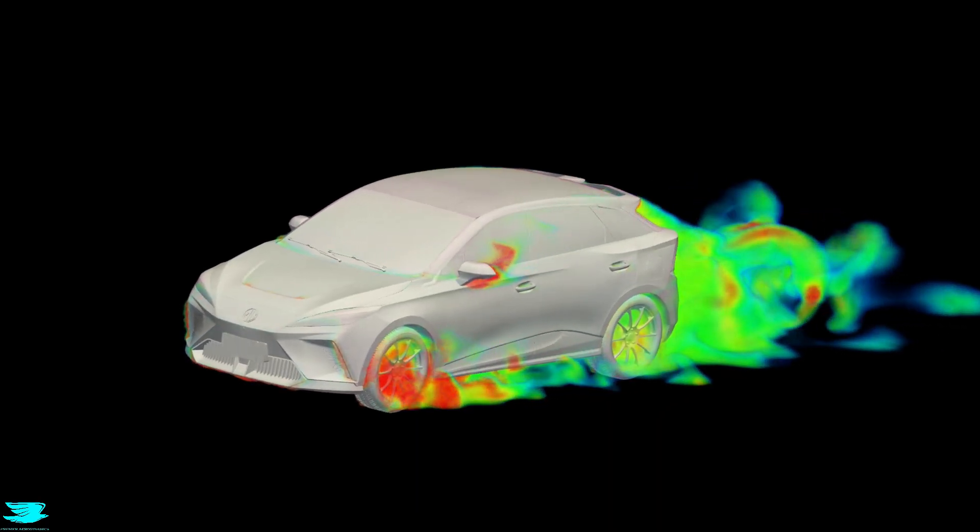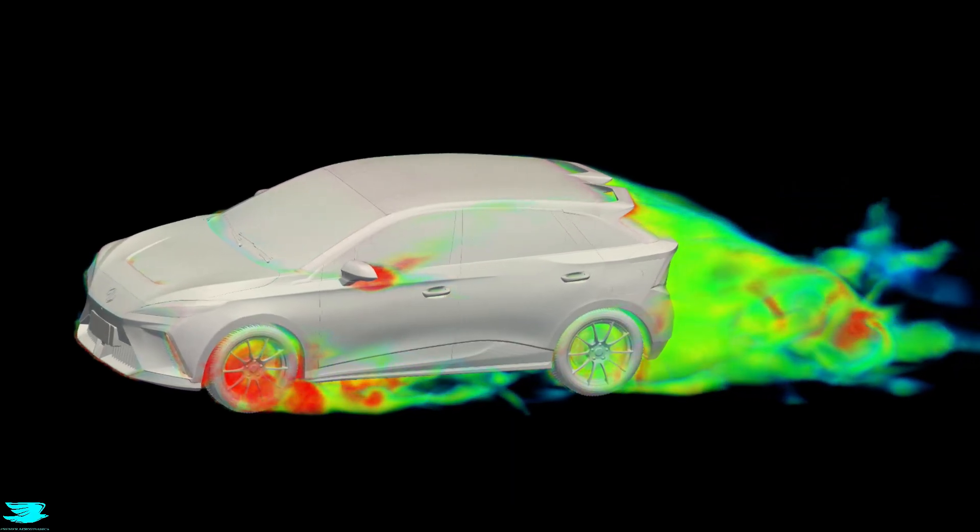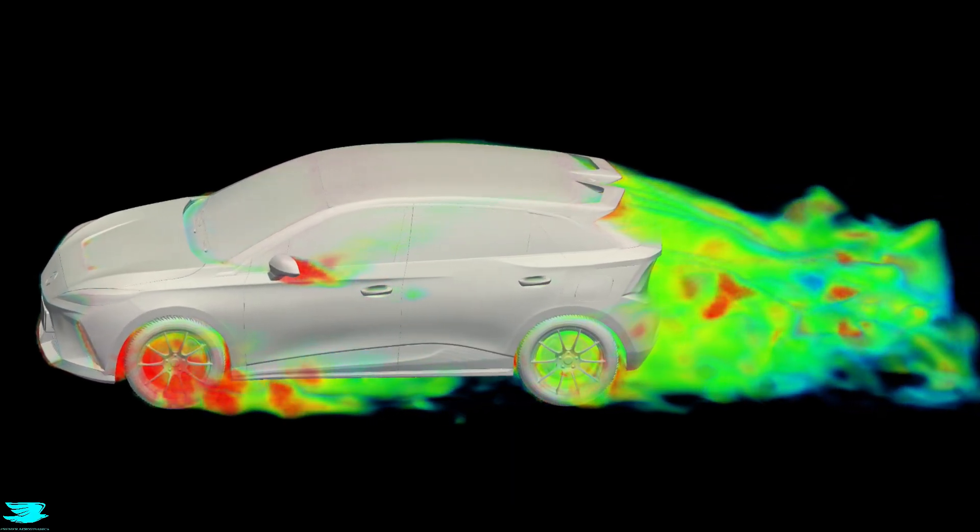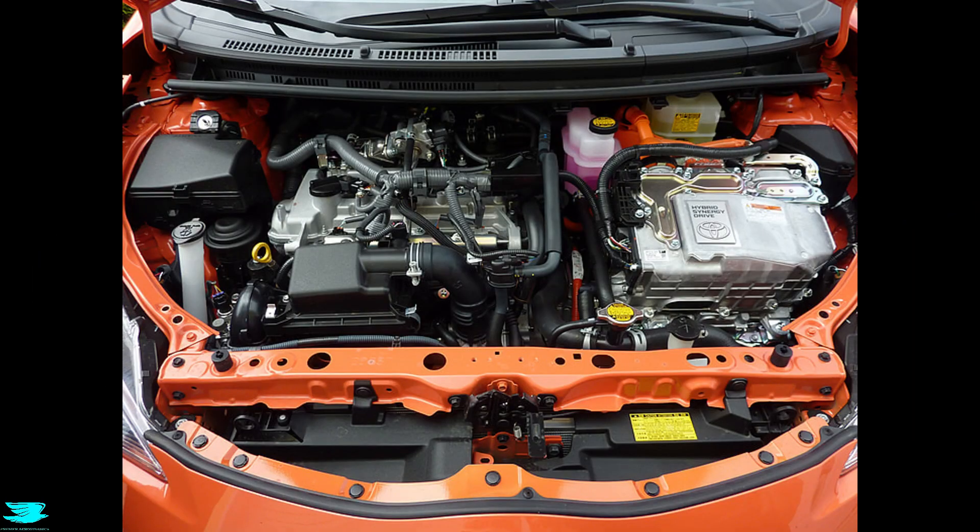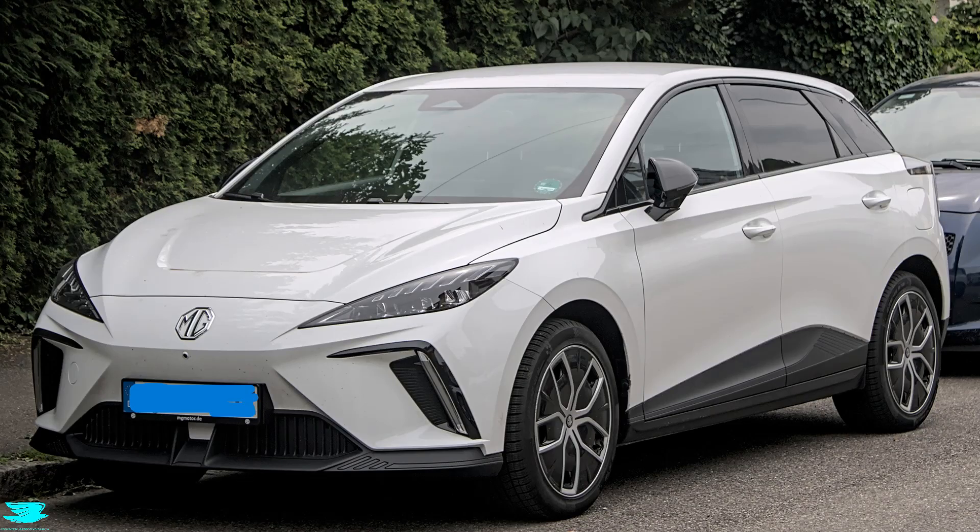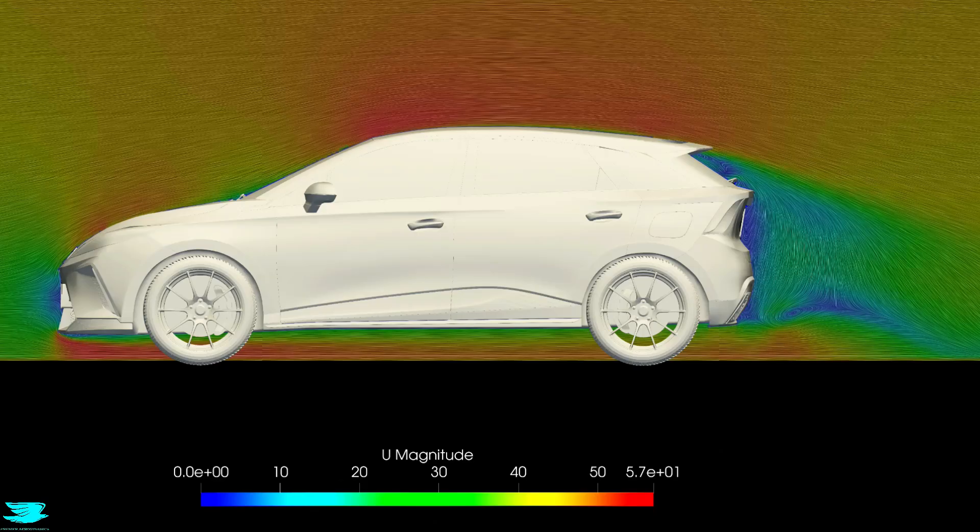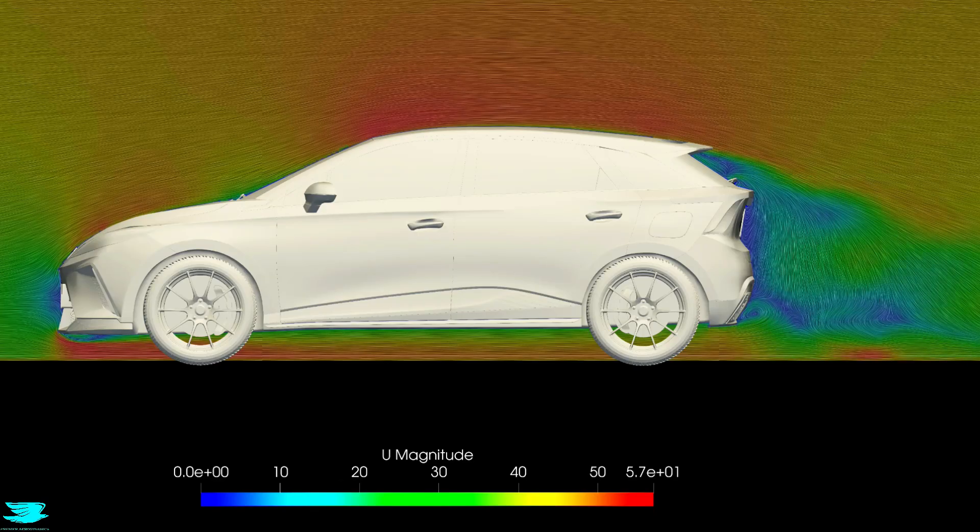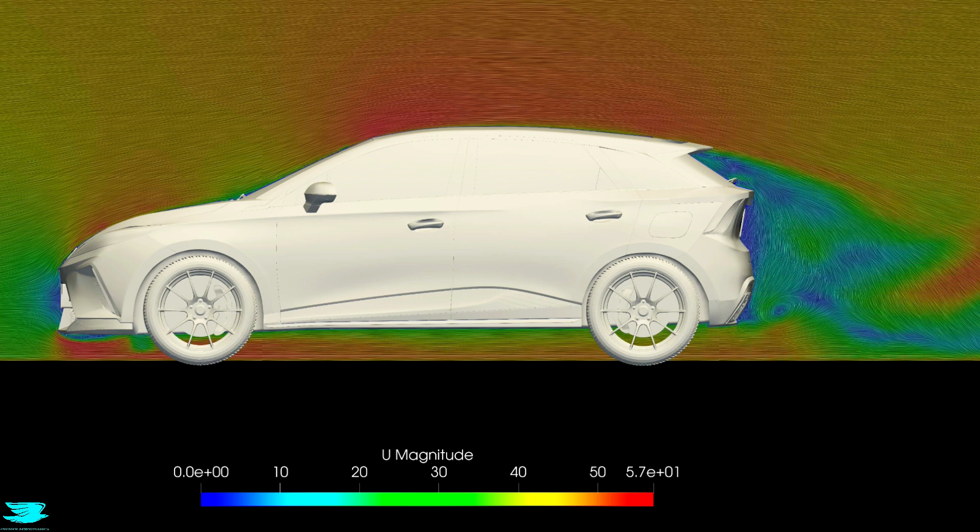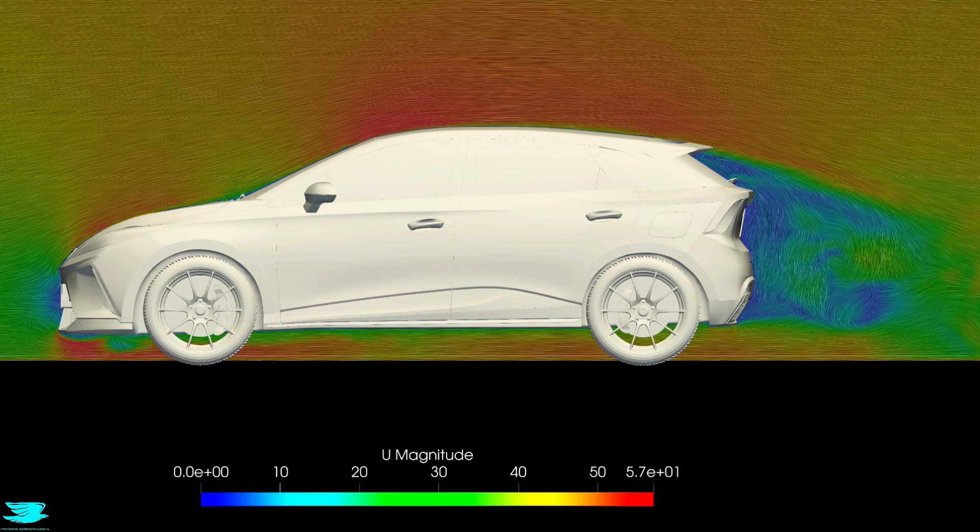The first reason why the drag coefficient is so low is that it is much less of something called cooling drag. This is the drag a car incurs when the air from outside goes into the car to cool it down. Electric cars have less cooling flow and hence less cooling drag. The MG4 is no different.